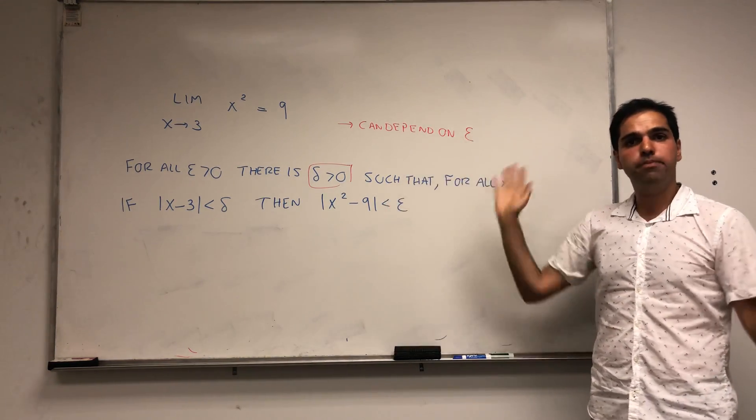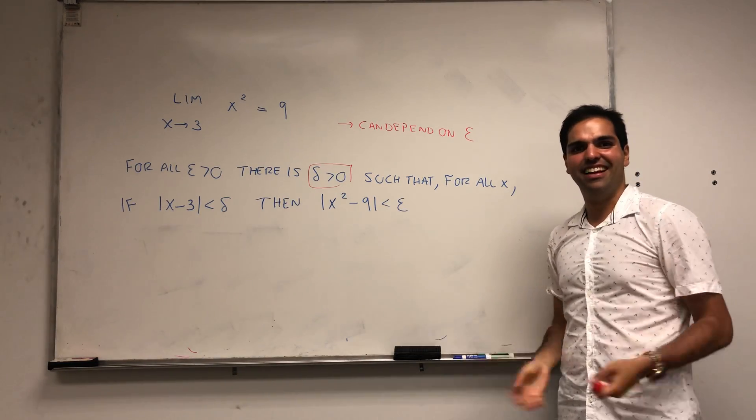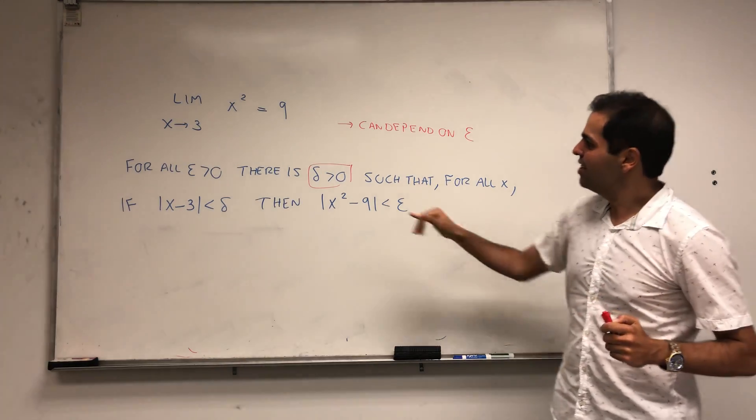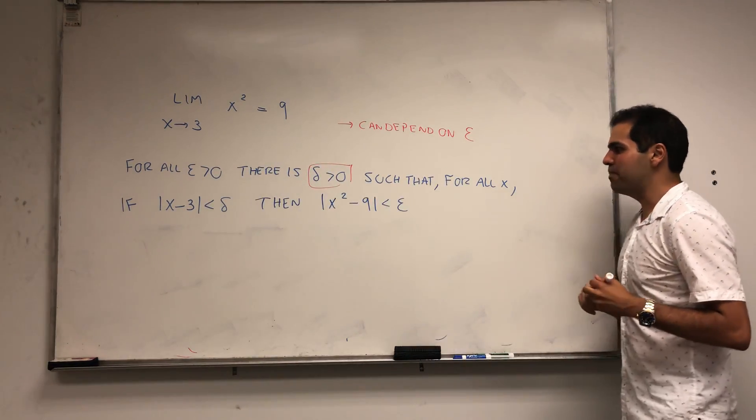If your friend says epsilon is 1 half, you try to do better and you say delta is 1 ninth, for example. Because delta comes after epsilon, it's okay to depend on epsilon.